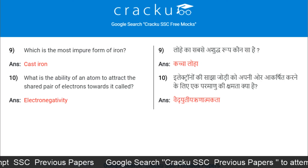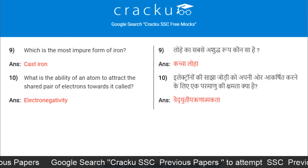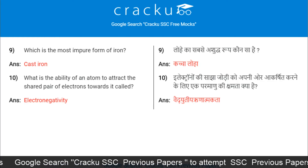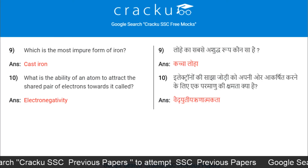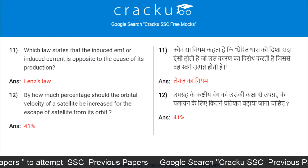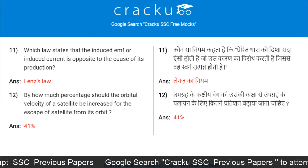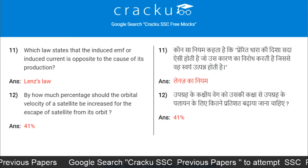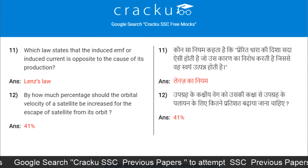Which is the most impure form of iron? Cast iron. What is the ability of an atom to attract the shared pair of electrons towards it called? Electronegativity. Which law states that the induced EMF or induced current is opposite to the cause of its production? Lenz's law.